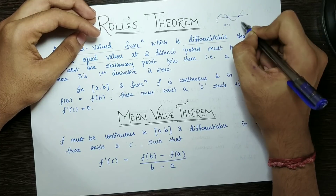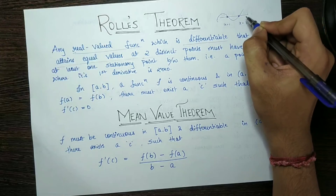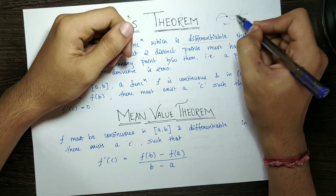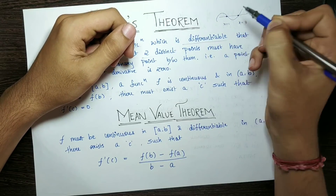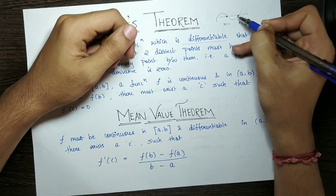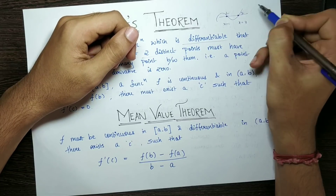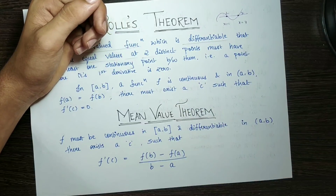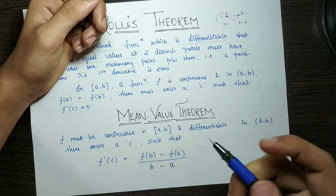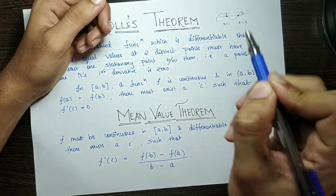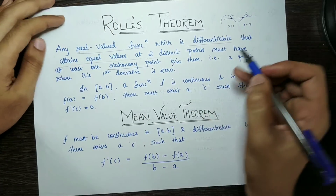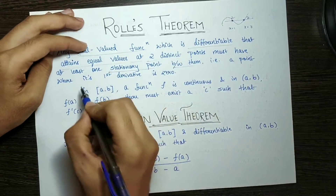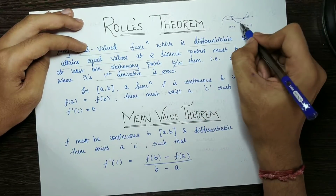For example, let x equal to 1 and x equal to 3 be two points. At both these points, the function has the same value — say f(1) equals 2 and f(3) equals 2. In between x=1 and x=3, there has to be a stationary point — that is, a point where the derivative is 0.